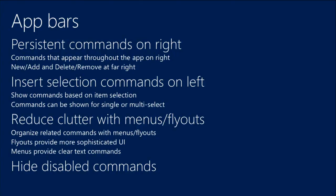If you have lots of commands, as LOB apps tend to have — toolbars with groupings, 500 different commands nested 10 levels deep — you can do flyout-type stuff in the app bar. A button can hover to show multiple related options. For example, a save button could flyout a menu with Save, Save As, Save As New — variations on whatever that icon represents.